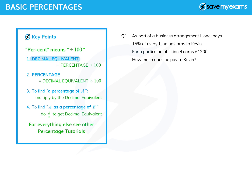One thing we're going to need to know about is the decimal equivalent of a percentage. It's a very useful thing, and that is the percentage divided by a hundred. Fairly clearly, if you want to find the percentage from the decimal equivalent, you do the decimal equivalent times a hundred. You should be able to convert freely between percentages and decimal equivalents — they are in fact the same thing.